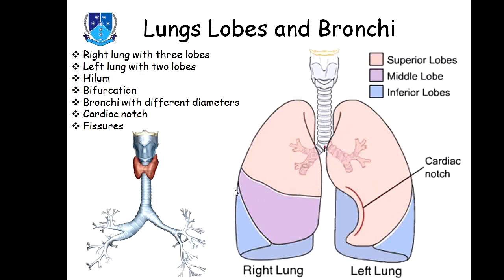The left lung also has an oblique fissure. You can also see that this area of the left lung is somewhat contracted and represents a notch-like structure called the cardiac notch. This is a space for the accommodation of the heart, because the heart lies in this area.